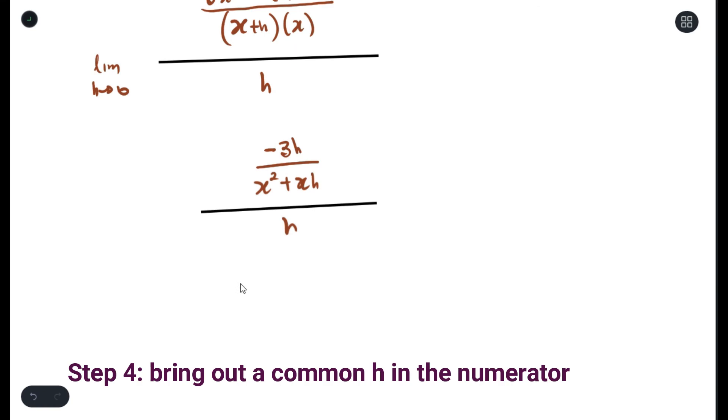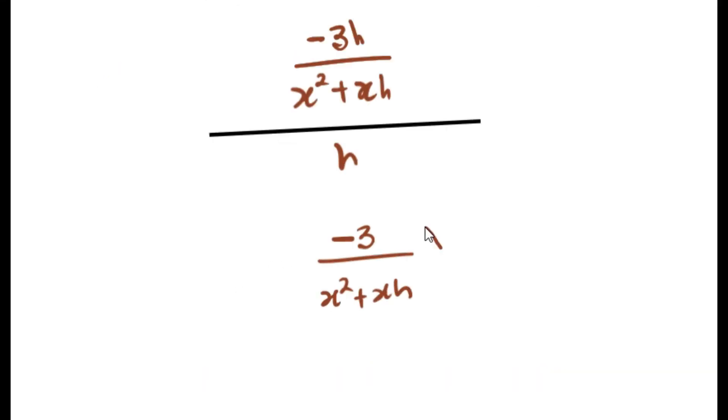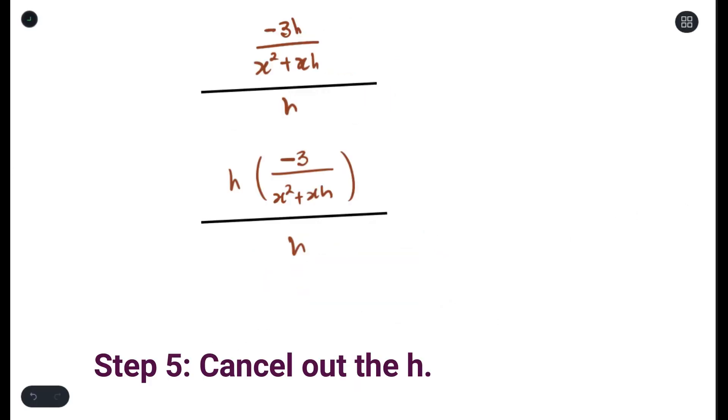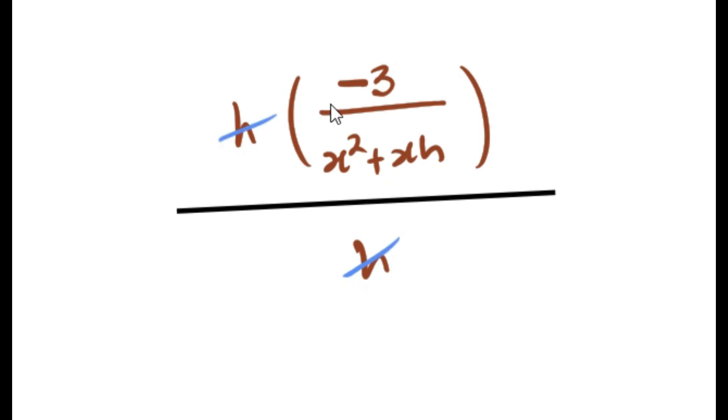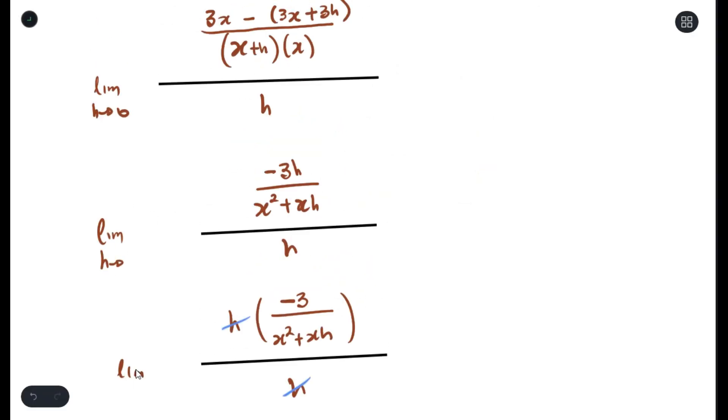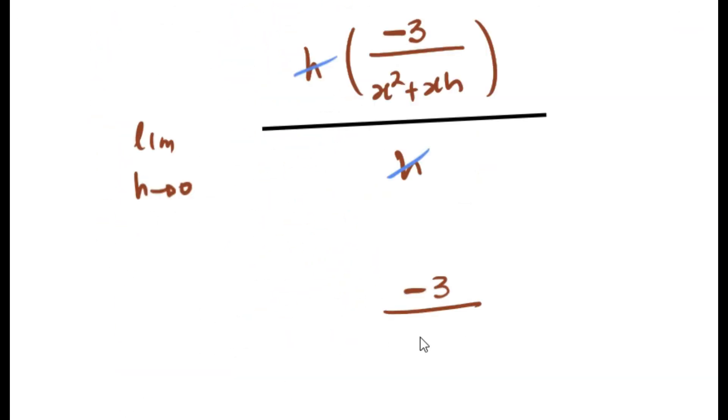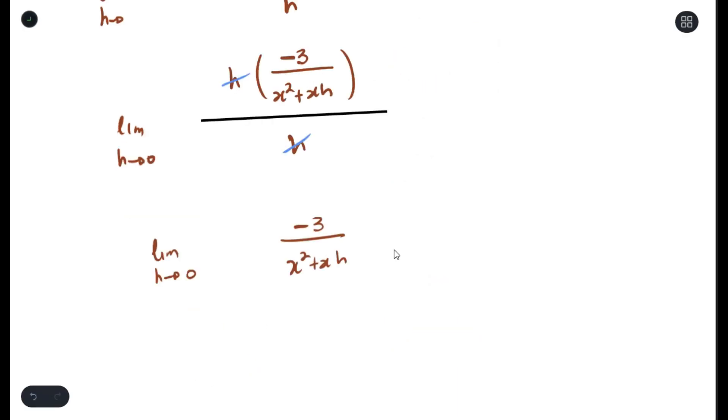The next step is to bring out a common factor of h. And you can cross cancel the h's. Now that no simplification can be done, you can finally use your limit by substituting h equals 0.